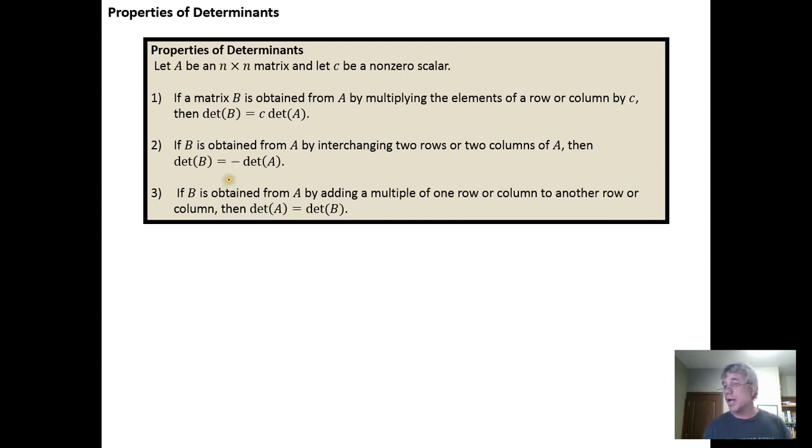matrices into reduced row echelon form using elementary row operations. So the first claim is that if you have a matrix B that you obtain from a matrix A by multiplying any row or column by a scalar C, then the determinant of B is C times the determinant of A.